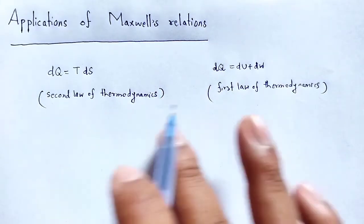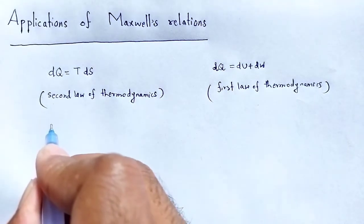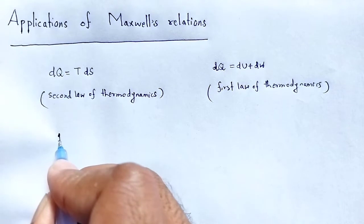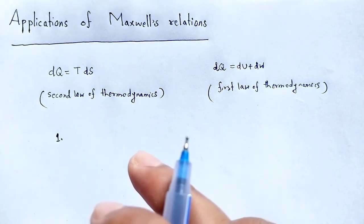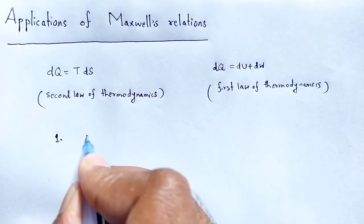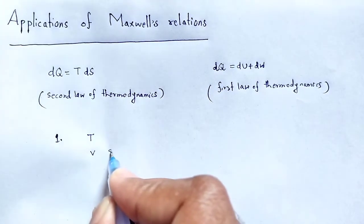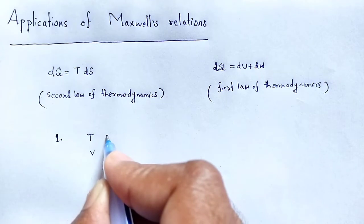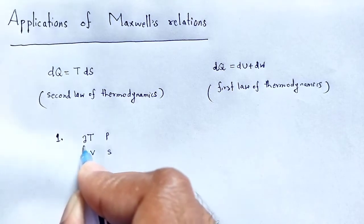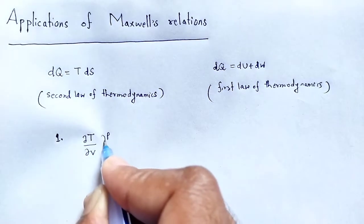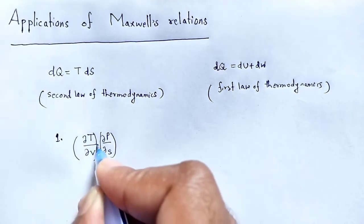And Maxwell's four relations, we write one by one. The first one — we use the mnemonic 'Tendulkar Very Special Person' to write Maxwell's four thermodynamic relations. The first relation involves del T, del V, del P, del S — these are equal.